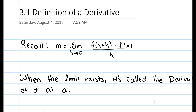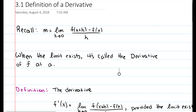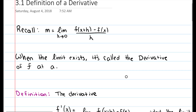Recall from the previous chapter that the definition of slope is the limit as h approaches zero of f of x plus h minus f of x, all divided by h. When the limit exists, it's called the derivative of f at a, where a represents any point.